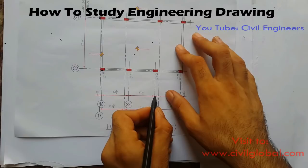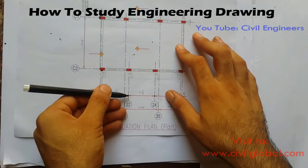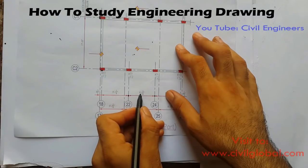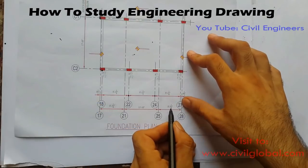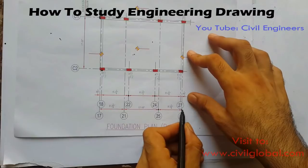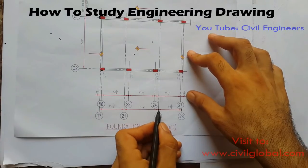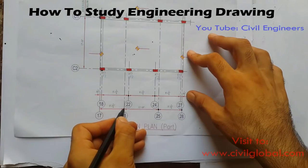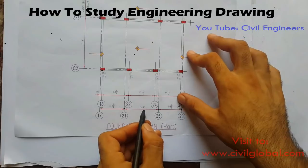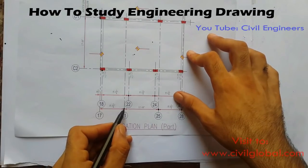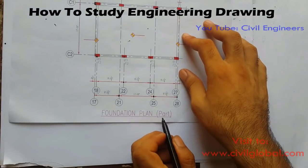Now here are some dimensions. Dimensions are measured from one column center to another column center — that means from one grade line to another grade line. Here we have nine feet one inch and one quarter. The next span is eight feet. From this grade line to this one is eight feet. From this grade line to the next, the distance is eleven feet ten inches. And from this grade line to the next one is eight feet three inches. This is the foundation plan.